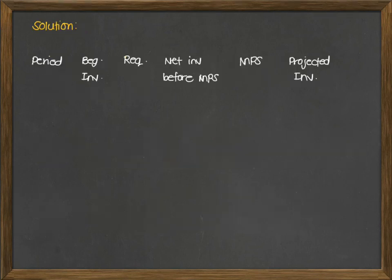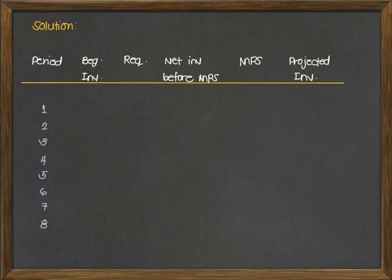For our solution, we will be writing the following columns for our table: period, beginning inventory, the requirement or customer order, the net inventory before MPS, the MPS, and the projected inventory — for all 8 periods. The beginning inventory is 64. The forecast for periods 1 to 4 is 30, and for periods 5 to 8, the forecast is 40.